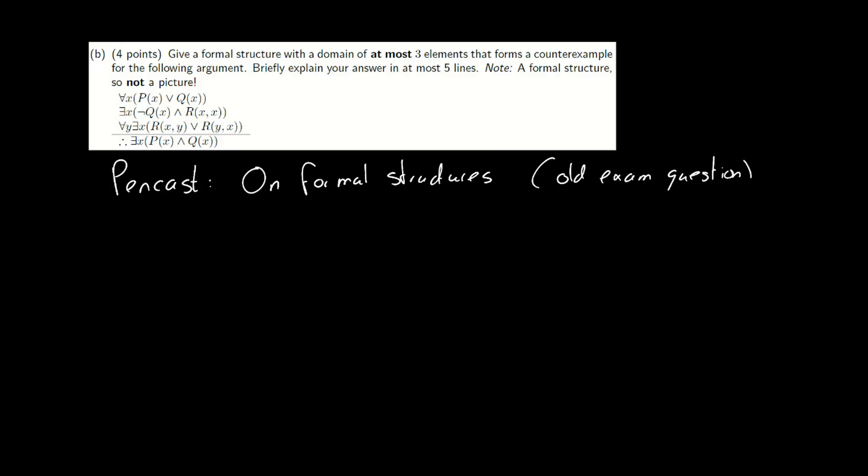The way I like to tackle these problems is to first take a look at the different predicates that we actually need to define truth sets for. In this case we have three: p, q and r.